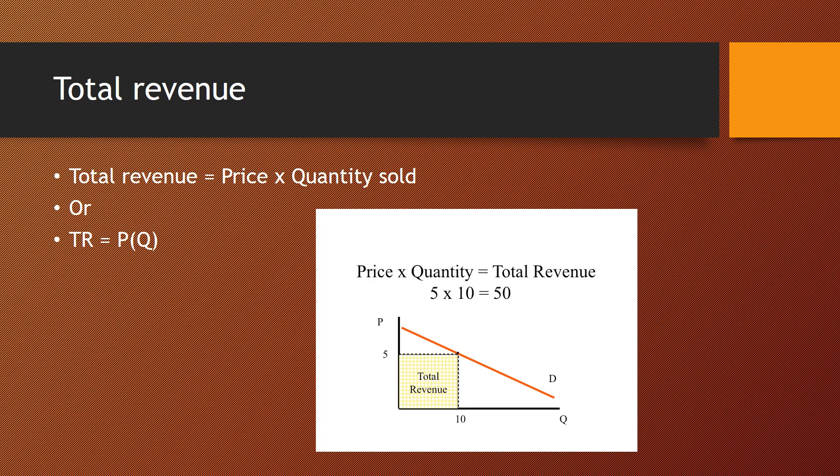Total revenue is equal to P times Q — price times quantity. In this model, the price is five dollars and ten units are sold, so total revenue equals five times ten, which is fifty dollars. What we're trying to figure out in this video is: what happens to total revenue if the price goes up to six dollars, or falls to four dollars? How much does quantity demanded change?